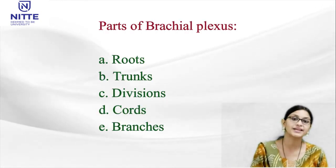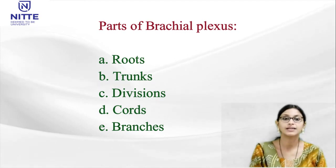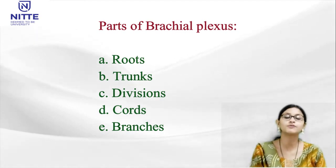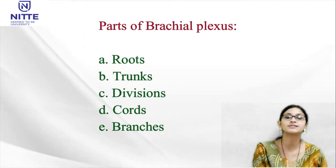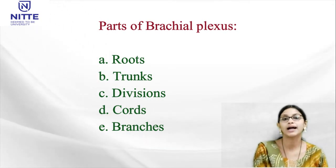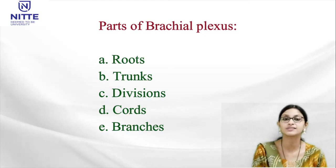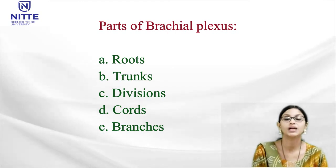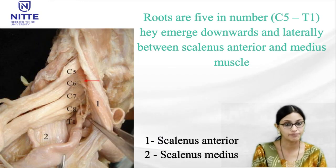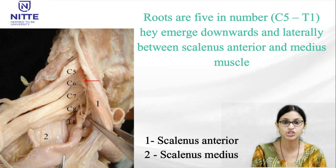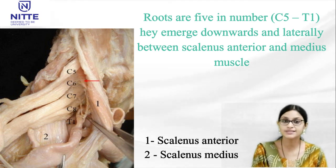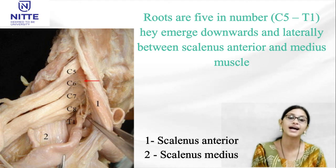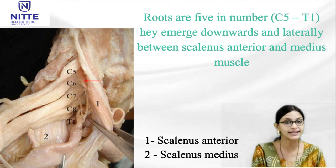The brachial plexus has parts: roots will form the trunk, trunk will form the division, divisions will form the cords, and cords will give rise to the branches of the brachial plexus. The roots are 5 in number, C5 to T1, and these roots emerge downwards and laterally between the scalenius anterior and medius muscles.